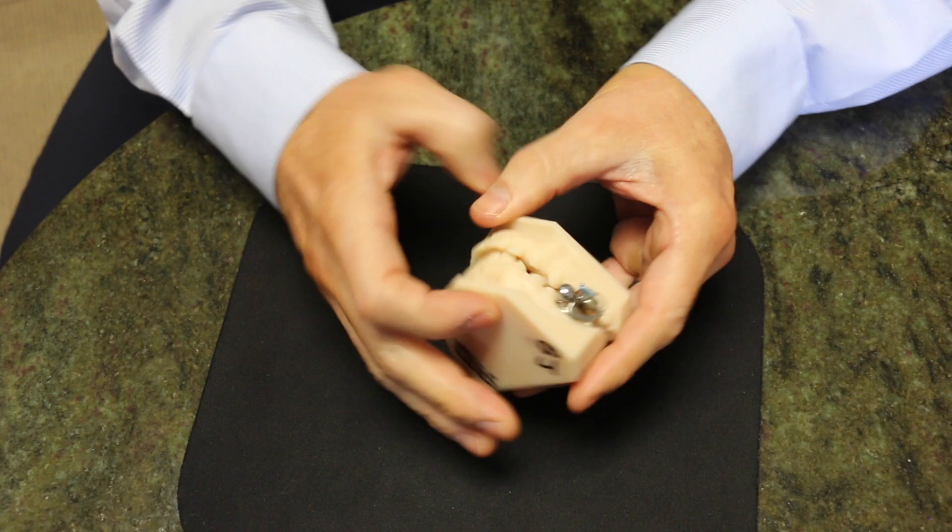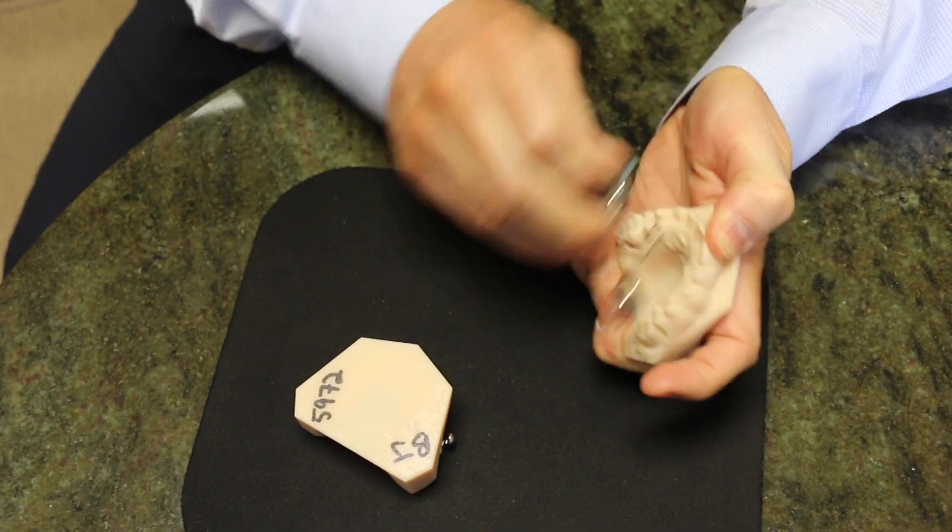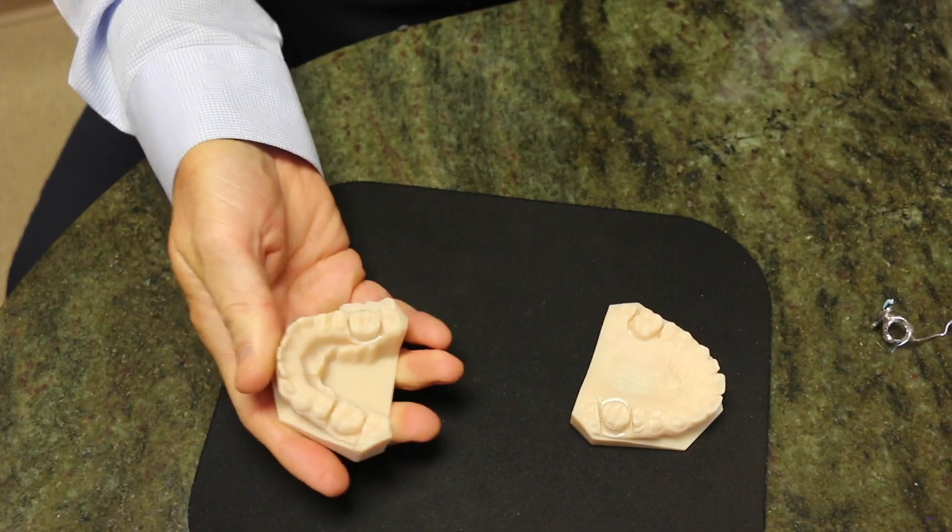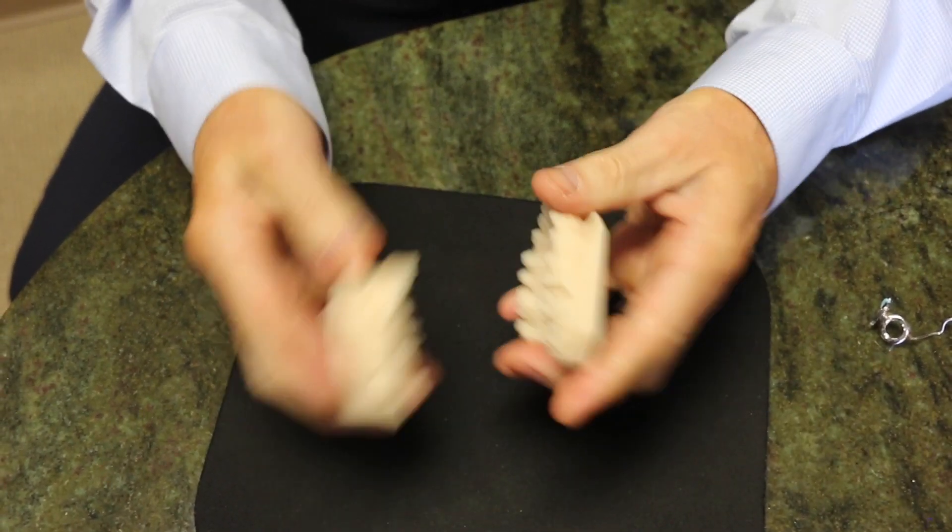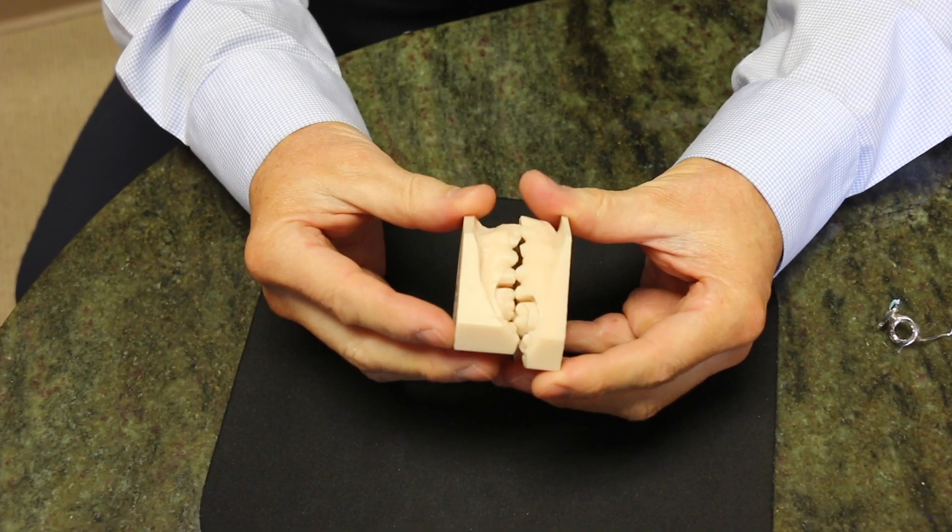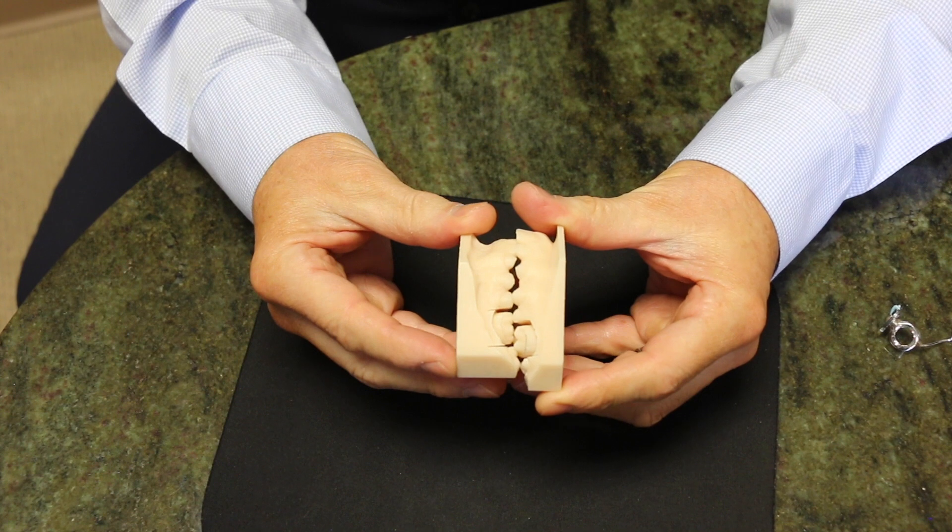After a year we remove the appliance like this and like this, and then we put braces on the rest of the teeth and finish up the straightening and fine-tuning of the bite. But their jaw has grown into that position and now this is their new bite.